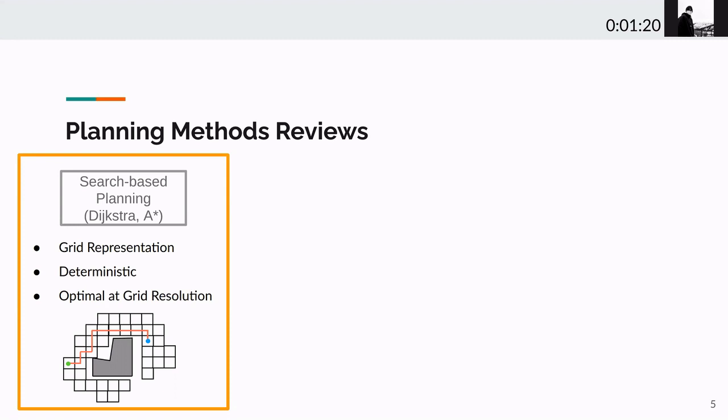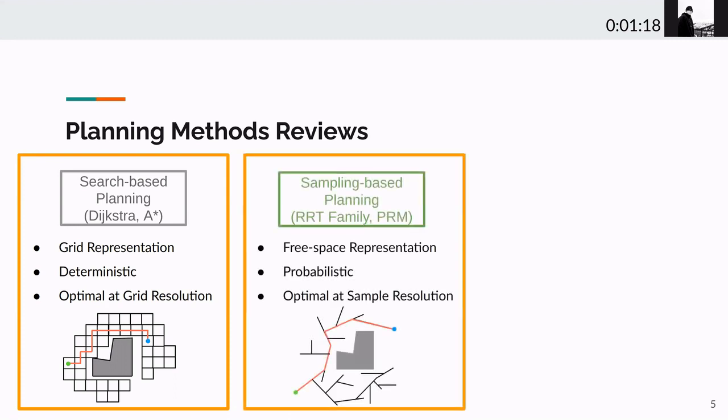Sample-based planners like RRTs and PRM draw random samples in the free space of environment and propagate through the samples. A lot of those planners are probabilistically complete, meaning that the planner can find an asymptotically optimal solution if it can draw infinite samples.